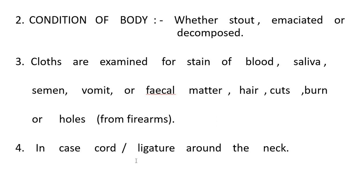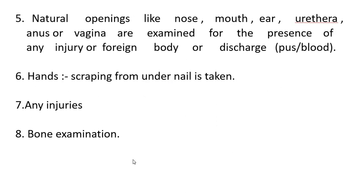The condition of the body is noted — whether it is stout, emaciated, or decomposed. Clothes are examined for stains of blood, saliva, semen, vomit or fecal matter, hair, cuts, burns, or holes from firearms. In case of cord or ligature around the neck, these are noted. Natural openings like nose, mouth, ear, urethra, anus, or vagina are examined for the presence of any injuries, foreign body, or discharge. Scrapings from under the nails are also taken.